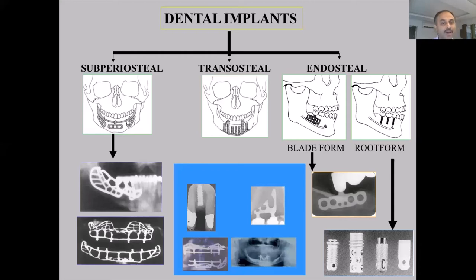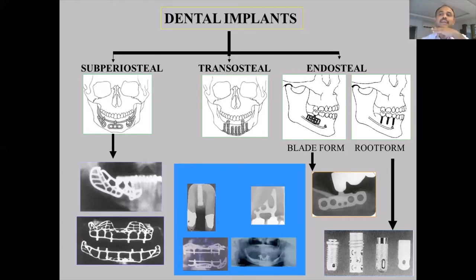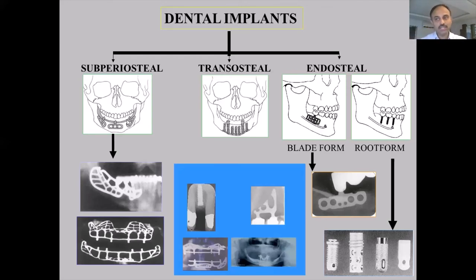Another system is the trans-osteal implant — as the term denotes, it goes through and through, which is why it is also called a staple implant. A frame is screwed from the inferior surface of the mandible, a covering is placed inside the oral cavity, and the screw is tightened — essentially stapling a thin section of the mandible between two frames. This system is not used nowadays, unless the patient has a very thin, atrophic mandible and is in good medical health.